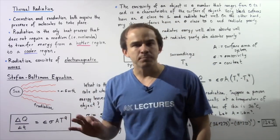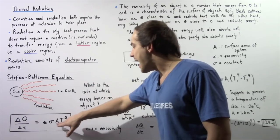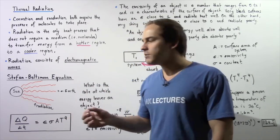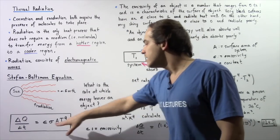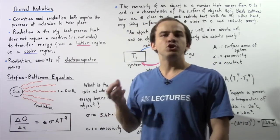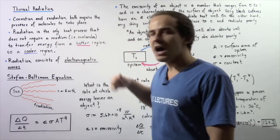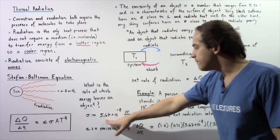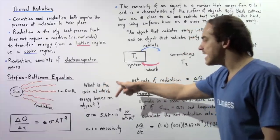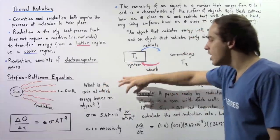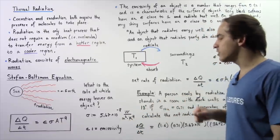T is the temperature of the object given in Kelvin, and A is the surface area of the object emitting radiation. Sigma is a universal constant known as the Stefan-Boltzmann constant, with a value of 5.67 × 10⁻⁸ watts per meter squared per Kelvin to the fourth power.